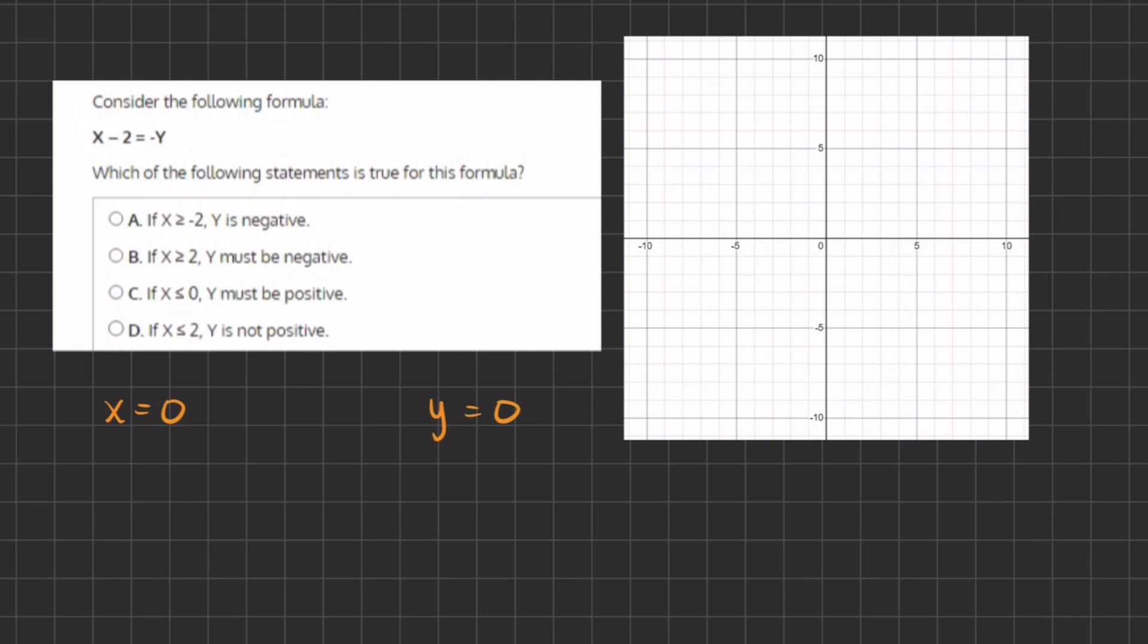So let's find these two points and plot them on our graph to see our linear function. So when x equals 0, let's plug that in, we have 0 minus 2 equals negative y. So we have negative 2 equals negative y. Now we can divide negative 1 on both sides and we have 2 equals y. So our first point is going to be 0 up 2. It's going to be right over here.